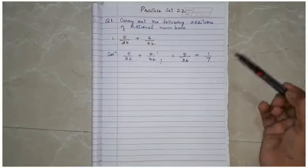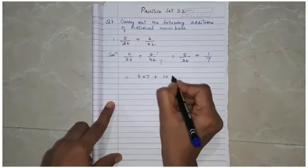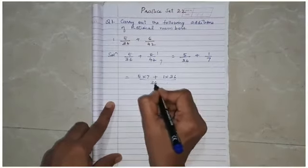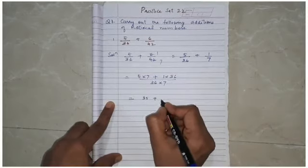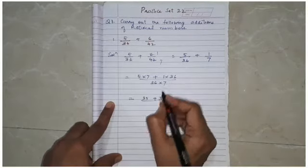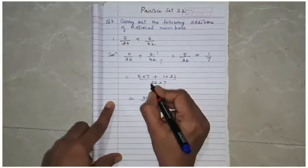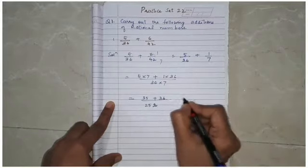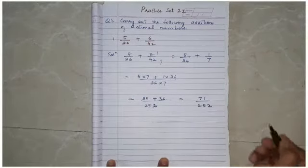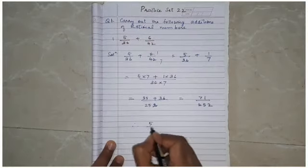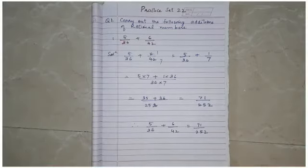Now we cross multiply: (5 × 7 + 1 × 36) upon (36 × 7). That gives us 35 + 36 = 71 in the numerator, and 36 × 7 = 252 in the denominator. Therefore our final answer is 5/36 + 6/42 = 71/252.